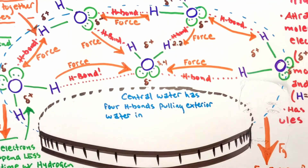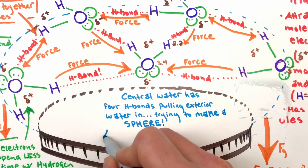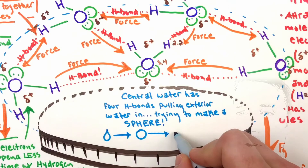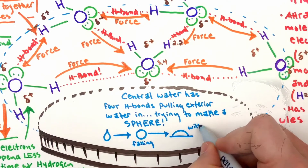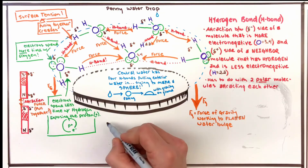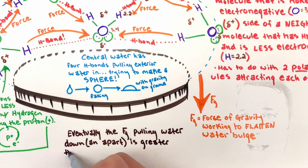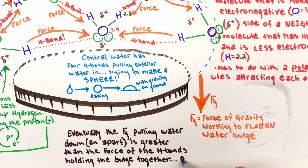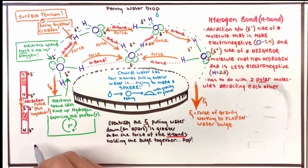If the drop is in the air — or if you look up a video of water in space, which is super cool — it forms a cool little sphere that bounces around. But on the ground, the water drop starts to flatten because of gravity. Gravity is trying to flatten it like a pancake; the water itself is trying to pull into a sphere. So we have these opposing forces, but eventually the force of gravity puts strain on the hydrogen bonds holding everything together that overcomes the ability of the hydrogen bonds to hold the waters together. Eventually the force of gravity pulling down and apart is greater than the force of the hydrogen bonds holding the bulge together, and then the whole thing pops.